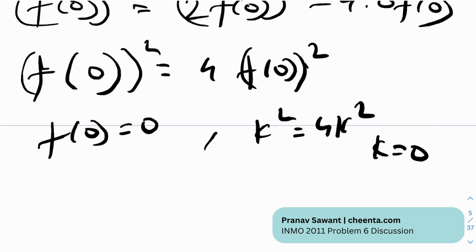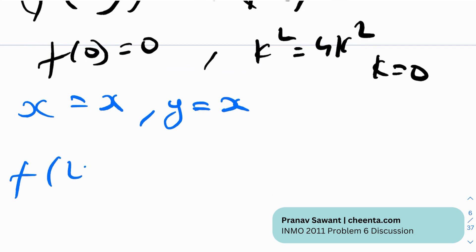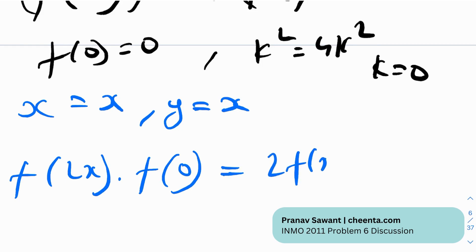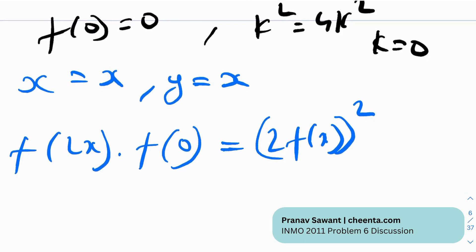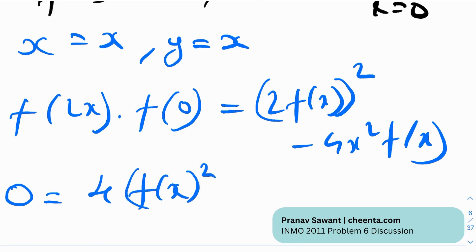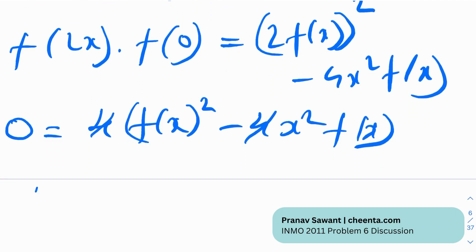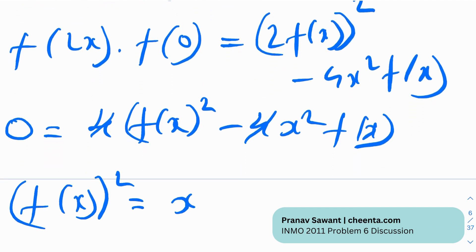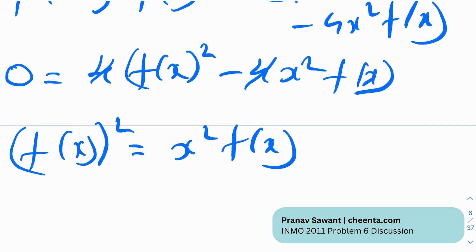Now let's use another substitution: put x = y. The left-hand side gives f(2x)·f(0) = 0. The right-hand side gives 2·f(x)² − 4x²·f(x). So we get 0 = 4·f(x)² − 4x²·f(x). Cancelling the 4 from both sides, we get f(x)² = x²·f(x).